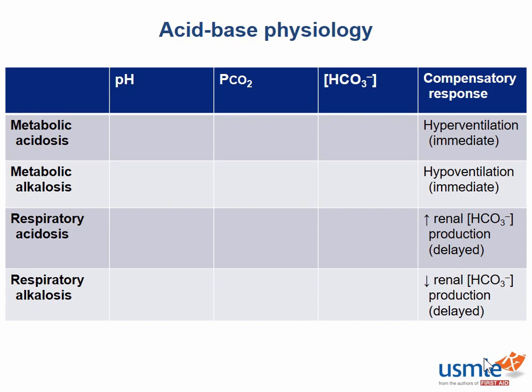In metabolic acidosis, we know that the pH is decreased because this is an acidosis. Because it is metabolic, the bicarb level will be decreased in a metabolic acidosis. How can the respiratory system compensate for this pH change? Well, to counter the metabolic acidosis, our bodies attempt to induce respiratory alkalosis by hyperventilating. We blow off as much CO2 as we can so that we can try to normalize our blood pH.